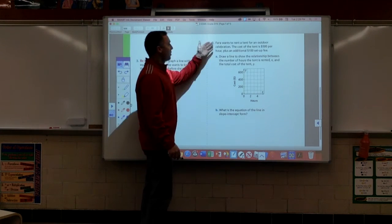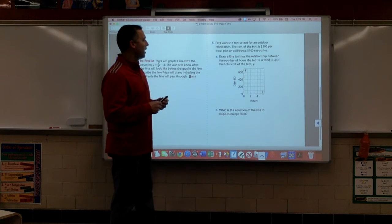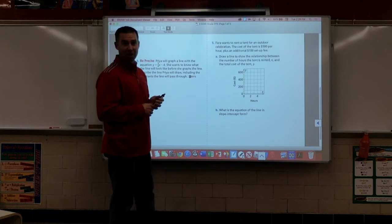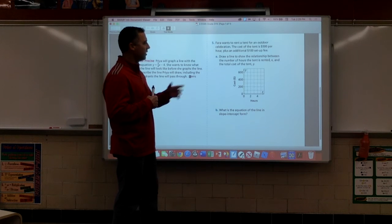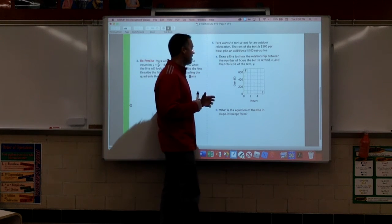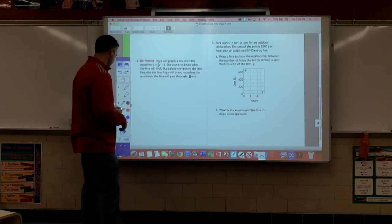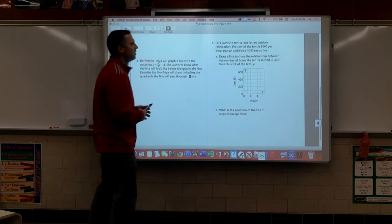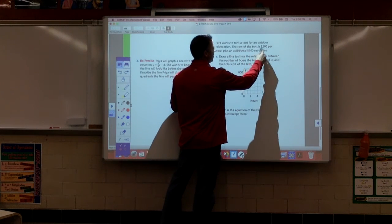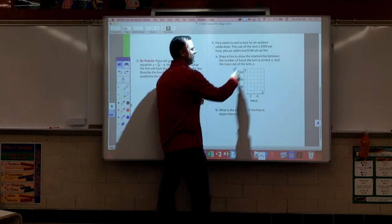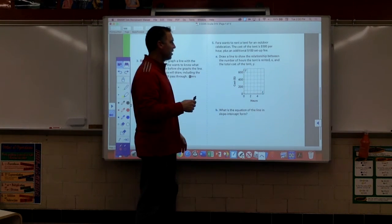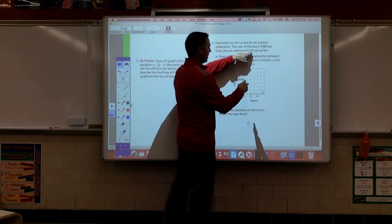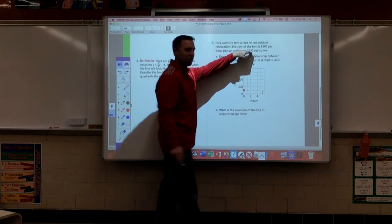Hey, number five. This person wants to rent a tent for an outdoor celebration. The cost of the tent is $500 per hour plus a $100 setup fee. Draw a line to show the relationship between x and y, the number of hours that tent is rented and the total cost. Think about which number represents slope. Which one is my starting quantity? Well, I think if I had to pay $500 per hour, that's kind of my rate of change. Every hour, I'm paying $500 more. So, this has got to be my y-intercept. $100. I'm going to make a point right there at $100.